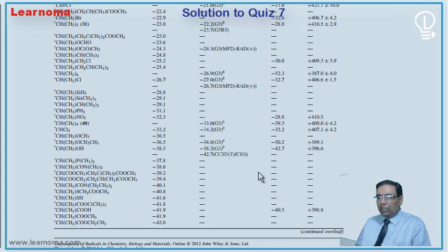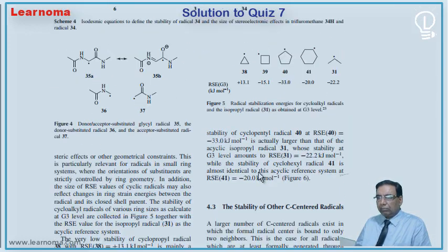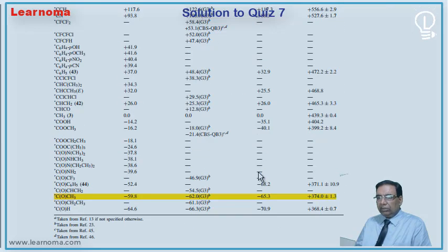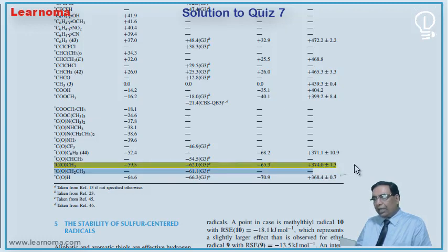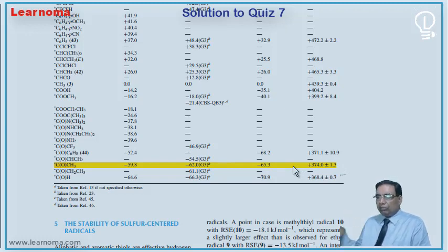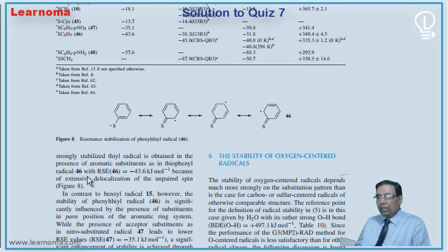Let us go for the final SIL radical data — that is option number C. Here the data says CH3C radical COCH3. It clearly is the same as option C: Rad data minus 59.5, and the bond dissociation energy is plus 374.0. The bond dissociation energy is low, therefore the radical is more stable — lower than option D. The Rad data is also more negative than the previous one: minus 59.8.